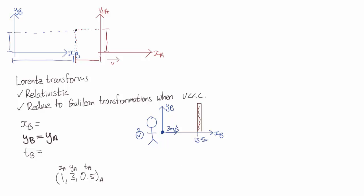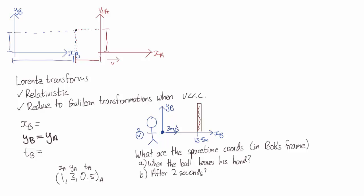So in Bob's frame what are the spacetime coordinates of the event: A, the ball leaving his hand; B, where the ball is after two seconds; and C, when the ball hits the wall. Assume that there's no gravity. The ball just travels straight ahead without falling.